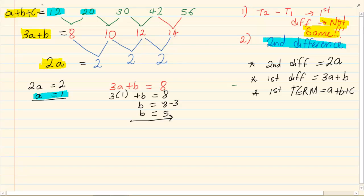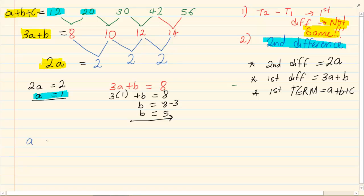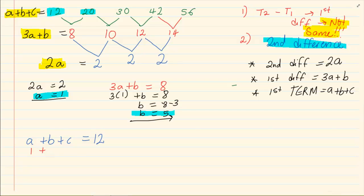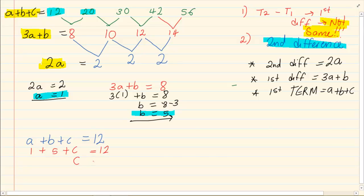Now how do we solve for c? Again, it is like simultaneous equations. I have a plus b plus c is equal to 12. a is 1 and b is 5, so 1 plus 5 plus c equals 12. To solve for c, I take over the 1 and the 5: 12 minus 6, so c is equal to 6.